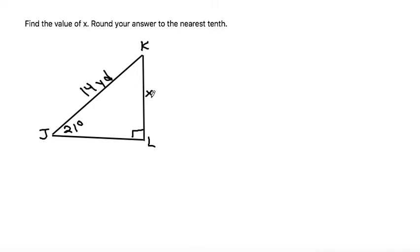Whenever we have this format, we're generally going to use a trig ratio. So let's look at this from the perspective of this angle. The x would be the opposite side, and the 14 would be the hypotenuse. So the ratio with opposite and hypotenuse is sine.